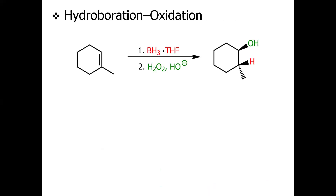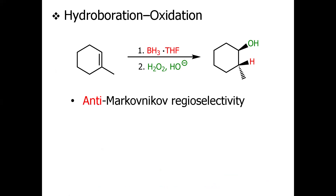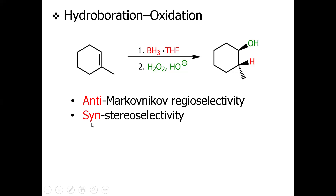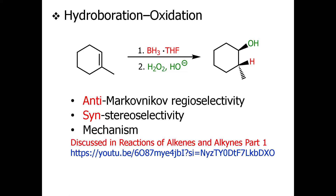Hydroboration-oxidation is another common method to synthesize alcohol from alkenes. It is a two-step reaction: the first step is hydroboration with borane, and the second step is oxidation with hydrogen peroxide under basic conditions to give the alcohol. Key features include anti-Markovnikov regioselectivity and syn-stereoselectivity — meaning OH and H are added to the same face of the double bond. This contrasts with oxymercuration-demercuration, which shows anti-stereoselectivity.